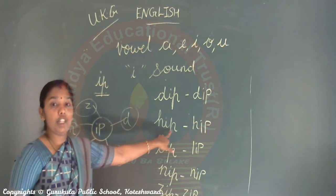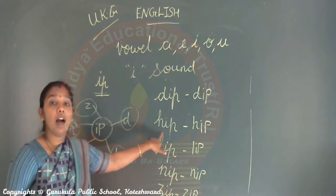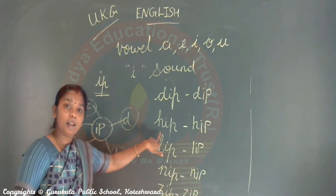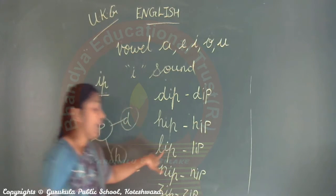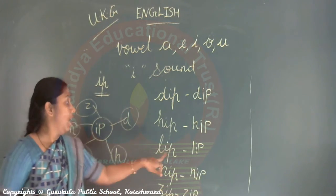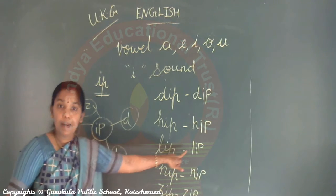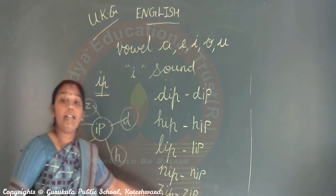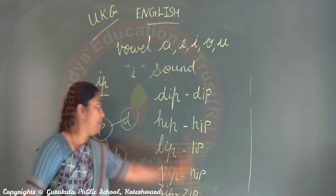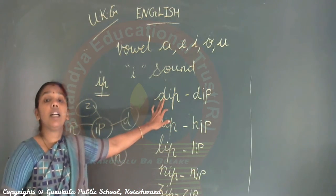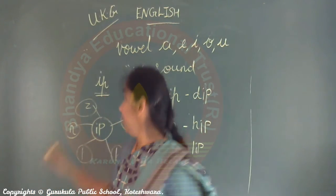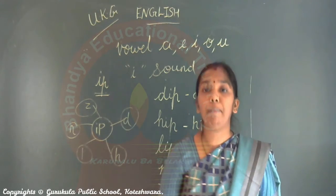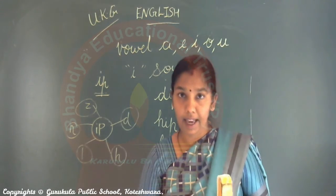What is this? H-I-P - Hip. L-I-P - your lips. N-I-P, Z-I-P - Zip. D-I-P. Like that, for I-P words: Dip, Hip, Zip, Lip, Nip.